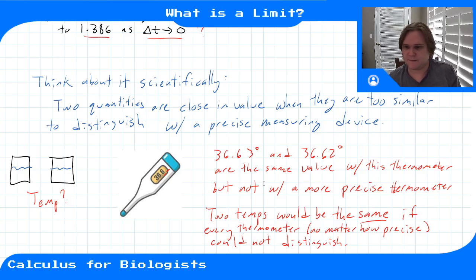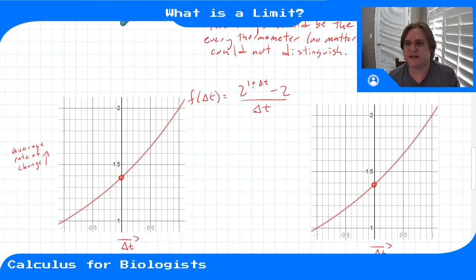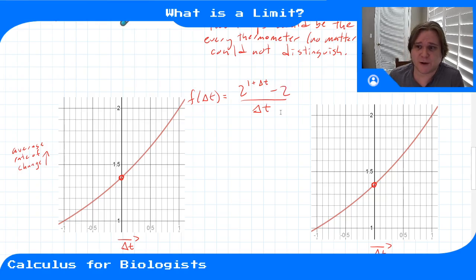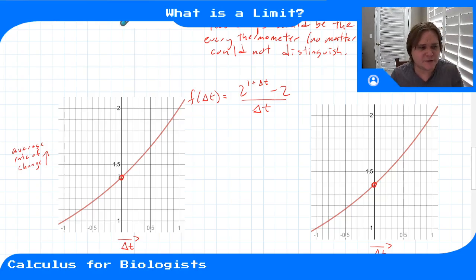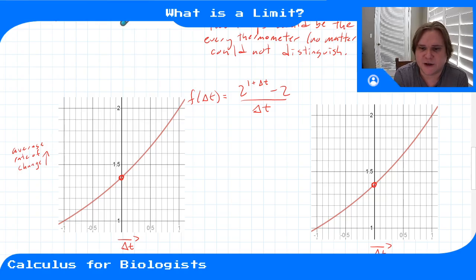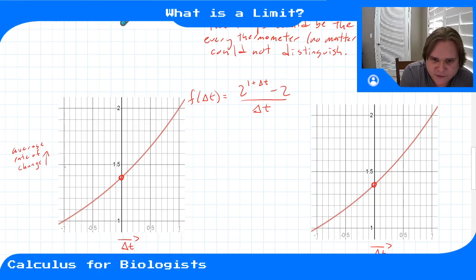Let's apply this to our function f of delta t equals 2 to the 1 plus delta t minus 2 over delta t, which represents the average rate of change of our population over a time interval delta t. This function isn't defined at zero, so we want to use a limit to decide what its value should be. Let's say our measuring device has precision within 0.1.